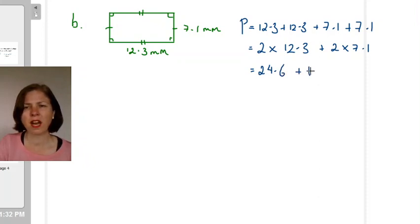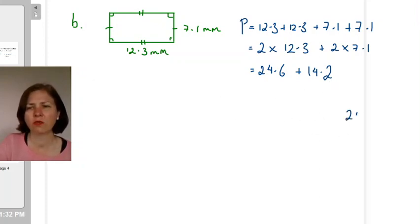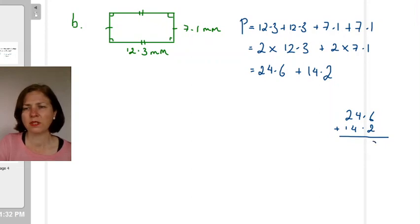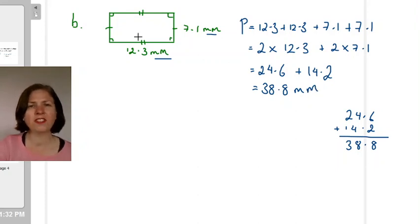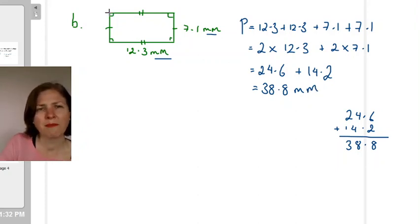So when I double 12.3 I get 24.6 and when I double 7.1 I get 14.2. Now I might need to do just a little bit of scribble working so I might just do it down here. 24.6 plus 14.2, let's add them up. 6 plus 2 is 8, keep my decimal point lined up, 4 plus 4 is also 8, 2 plus 1 is 3. So I get 38.8.